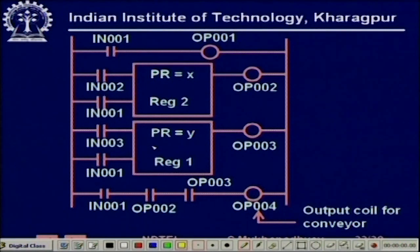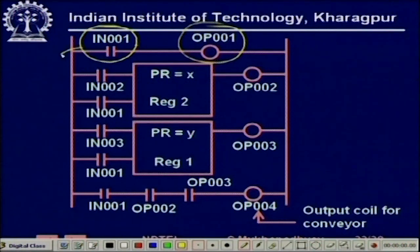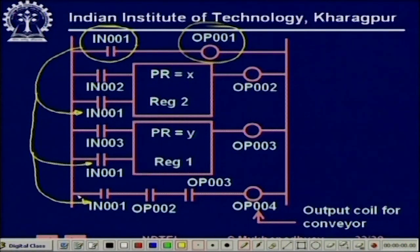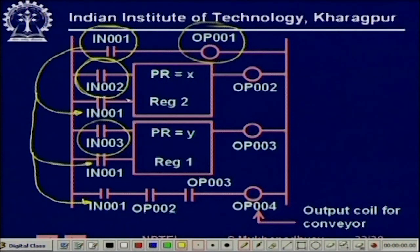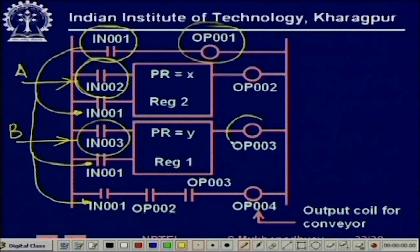We have two counters. First, this is the master switch — the moment it goes on, this output is asserted. When IN001 is asserted, all the associated contacts are also asserted, enabling both counters. The arrival of part type B is signified by one sensor, and part type A by another. Every time a part arrives there is a pulse and the corresponding count registers are incremented.